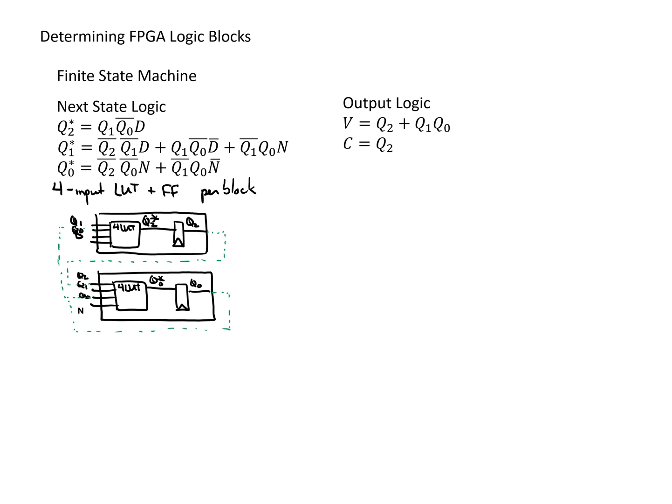That takes care of Q0. The last piece of the next state logic is Q1. Looking at Q1, it needs a total of five inputs: the three state bits Q2, Q1, Q0, as well as D and N. With a four-input lookup table, we can't implement a function of five inputs, so we need to break this up into multiple four-input lookup tables. There is a generic approach that would require a total of three logic blocks regardless of the function type.